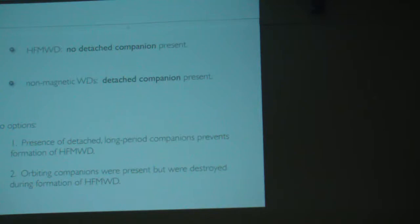It's hard to envision a scenario where that is true, especially when some of these are very wide binaries. The other option is that the original companions were there, and then in the formation process they were destroyed. Somehow they were instrumental to the process of forming a high-field magnetic white dwarf, but they were destroyed during that process.